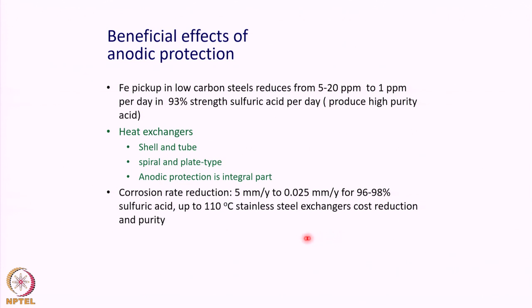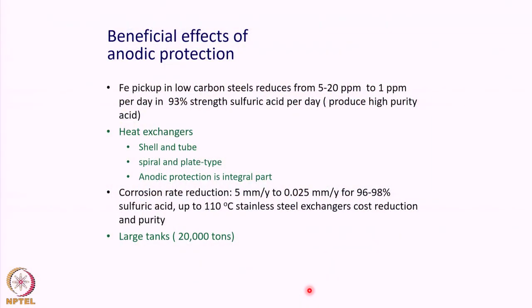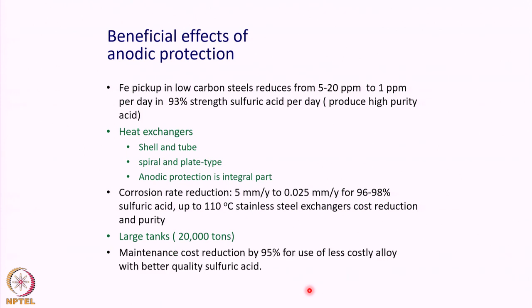The corrosion rate can be significantly reduced from 5 millimeters per year to 0.025 millimeters per year for sulfuric acid in the range of 96 to 98 percent up to 110 degrees Celsius, and at very low cost. Without anodic protection, one may have to apply stainless steels or nickel-based alloys, which are very expensive. Anodic protection is applied to large storage tanks of up to 20,000 tons; maintenance costs come down and no coatings are needed. For smaller tanks, anodic protection is not viable, and people use phenolic coatings instead.